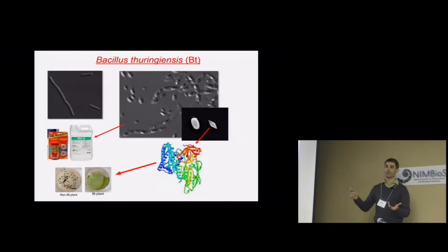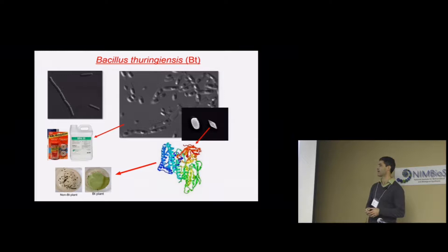These crystals are composed of proteins, and these proteins have insecticidal activity. The proteins that are in the crystal are usually in the form of a protoxin, so it needs to be processed in the organism to a toxin-active core that has insecticidal activity.